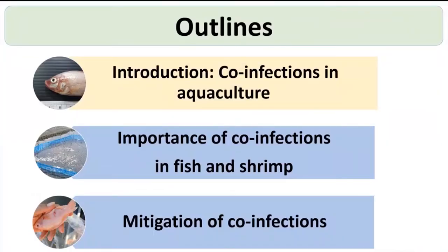I will divide my outline into three sections. The first is an introduction, where we talk about how co-infection is important and the different definitions of co-infections, especially in aquacultures, with a focus on fish and shrimp. Then we will talk about the importance of co-infections in fish and shrimp, and the last part will be on the control and medications of co-infections — how to reduce the impact on farmers and improve production.